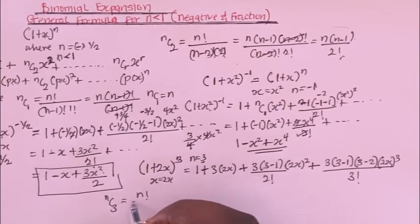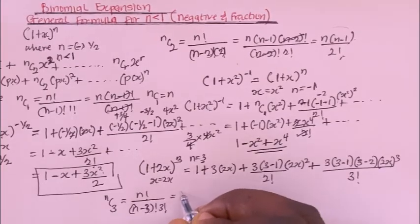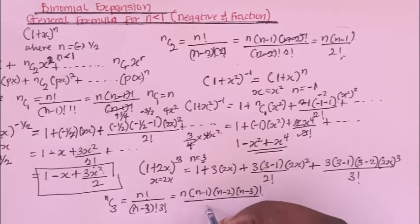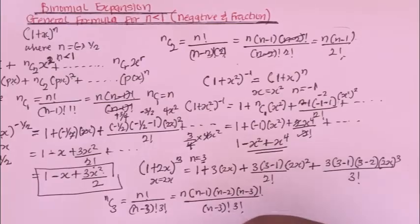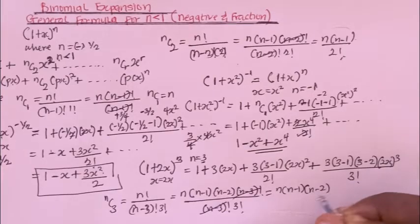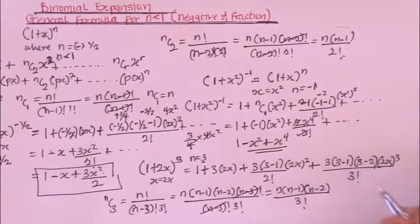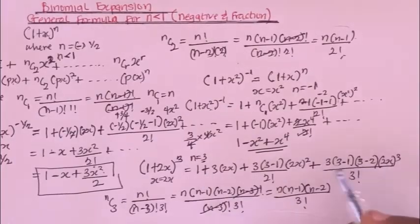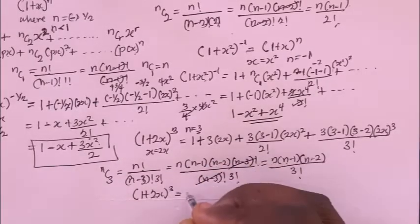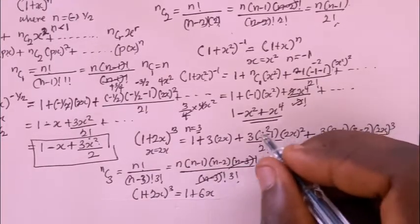Recall nC3 is n factorial divided by (n−3)! times 3!, which simplifies to n(n−1)(n−2) divided by 3!. With n=3, this gives 3(2)(1) divided by 3!. So simplifying our expansion: 1 plus 6x, plus 24x² divided by 2, which is 12x².